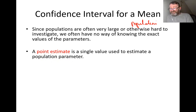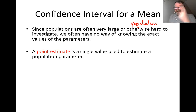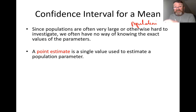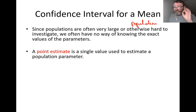A point estimate is a single value used to estimate the population parameter. I might take a couple of samples and say: based on these samples, here is the average age. That point estimate is exactly what it is — an estimate. It is not a true value. It's trying to estimate what the population parameter is. The sample statistic is going to try and estimate the population parameter.